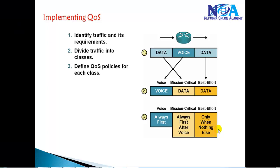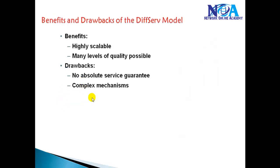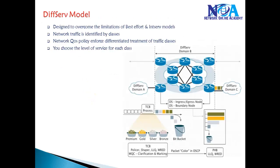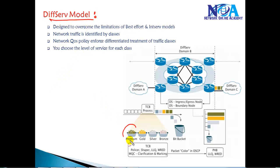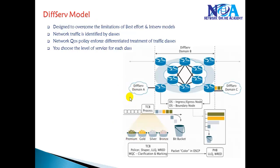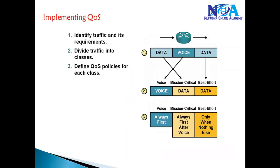In this video we will see implementing quality of service using the Modular QoS CLI (MQC). In a previous class we covered three different models: best effort, integrated services, and differentiated services. In the differentiated model, we classify traffic into different classes and treat each class with user-defined priority or bandwidth guarantees. Let's see how to configure QoS using the new MQC feature.